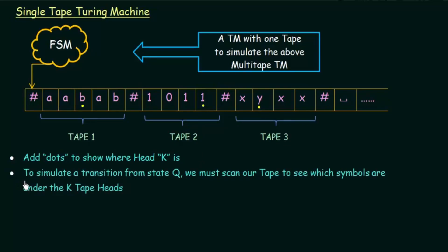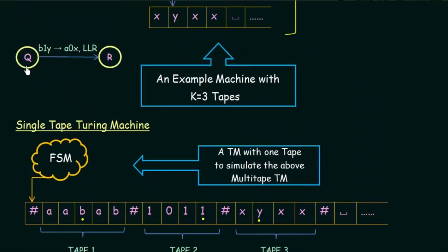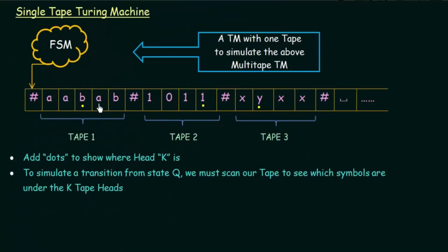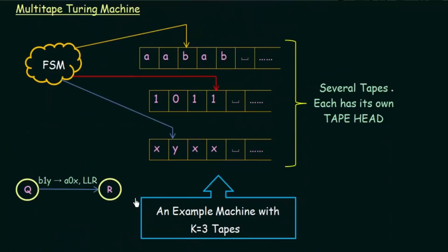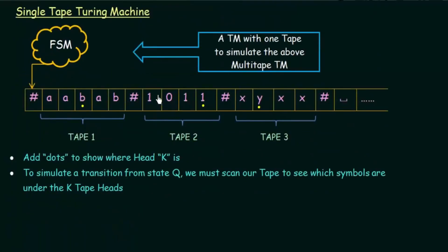The next step is: to simulate a transition from state Q, we must scan our tape to see which symbols are under the k tape heads. In the multi-tape Turing Machine we checked whether B, 1, and Y are under our tape heads — easily done with three separate heads. In our single tape Turing Machine, we do this by looking at our dots. By scanning the dots across the tape, we know where the tape heads are pointing.